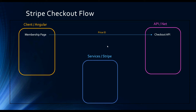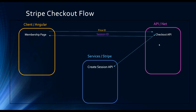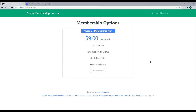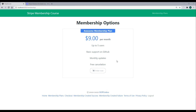The first thing we need to do to start the checkout process is create a session ID. To do that, we need to send in the price ID. From our client, the Angular application, we'll send a price ID to one of our own APIs. Then our API is going to talk with Stripe, sending in the price ID with some other information, and send back a session ID to our Angular application. So that's the part we're going to be working on in this video — working in the backend API, creating a checkout session API.